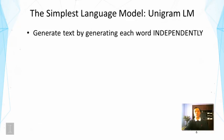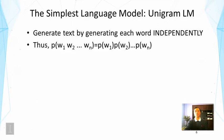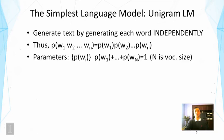Now let's look at the simplest language model: the unigram language model. In this case, we assume we generate text by generating each word independently. The probability of a sequence of words is then the product of the probability of each word. Normally words are not independent — seeing 'language' makes 'model' far more likely — but we make this simplifying assumption. The model then has precisely n parameters where n is the vocabulary size, with one probability per word, all summing to one, so strictly n minus one free parameters.